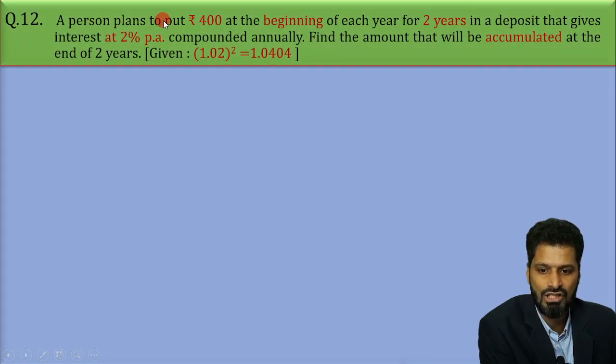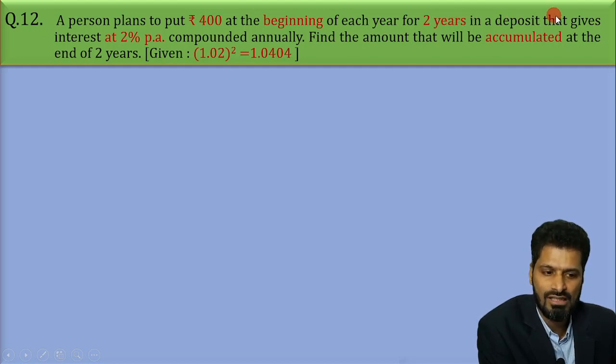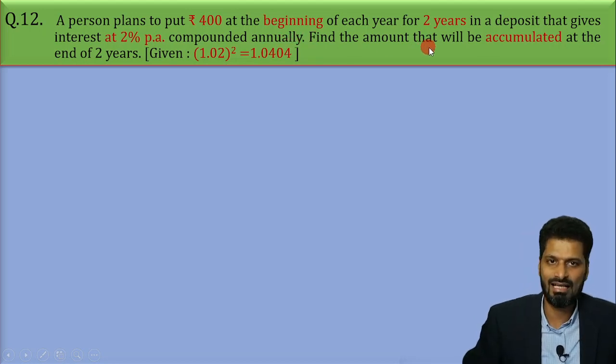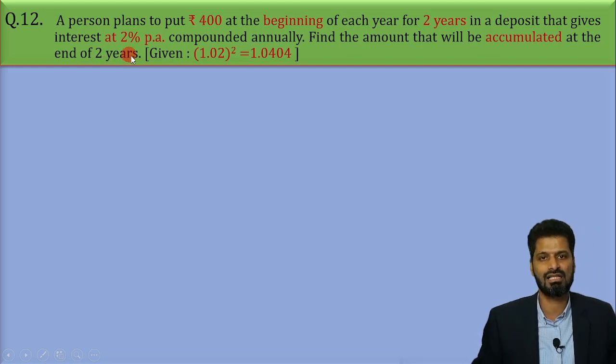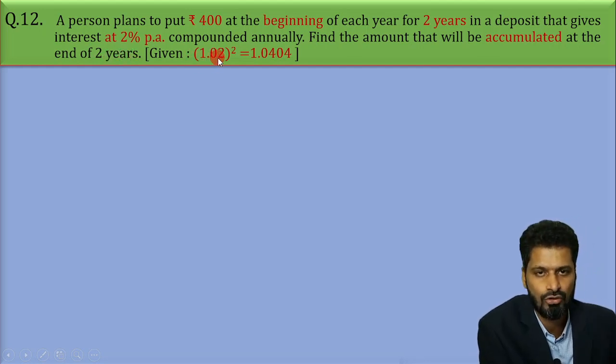The question says a person plans to put rupees 400 at the beginning of each year for two years in a deposit that gives interest at 2% per annum compounded annually. Find the amount that will be accumulated at the end of two years and we are given with 1.02 the whole raised to 2 as 1.0404.